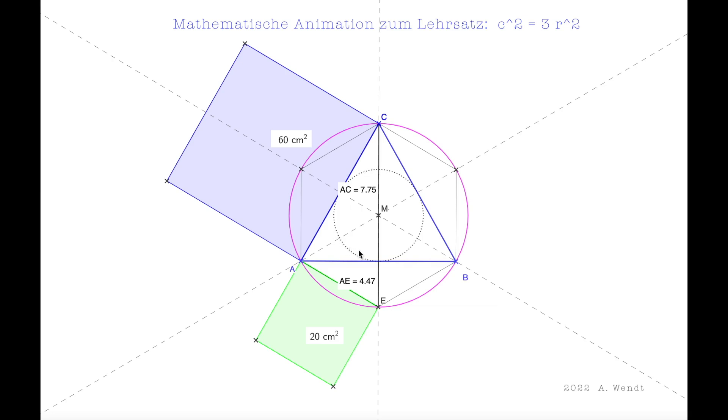Jetzt ist hier innen noch ein gepunkteter Kreis zu sehen. Das ist der Inkreis. Denn diese Seitenhalbierende halbiert nicht nur die Seite, sondern auch den Winkel. Das machen alle Seitenhalbierenden. Die sind also gleichzeitig Seiten- und Winkelhalbierende. Dadurch haben Um- und Inkreis den gleichen Mittelpunkt. Das sind konzentrische Kreise.